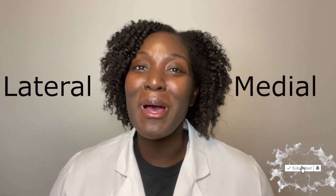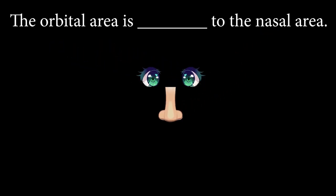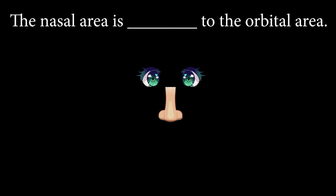Let's test your knowledge of lateral and medial with two body parts. The orbital area is ___ to the nasal area. If you said lateral, that's right — because your eyes are on either side of your nose. Your nose would be medial to your eyes because it's in the middle.